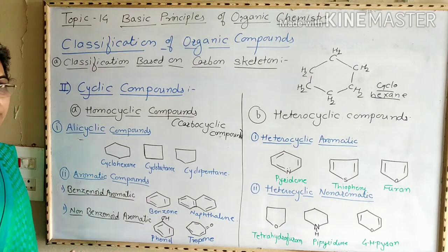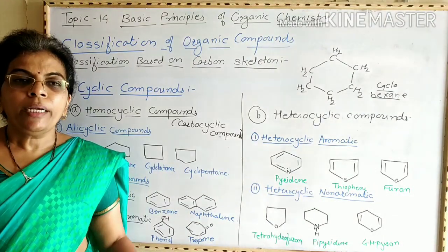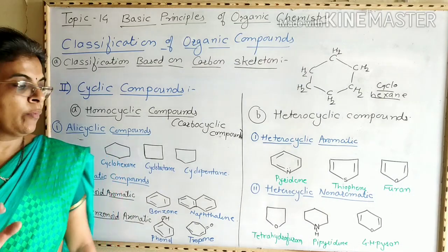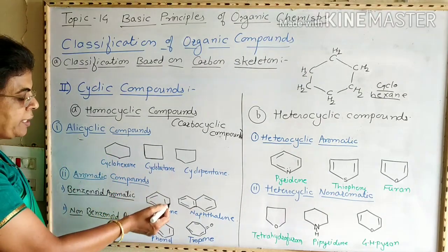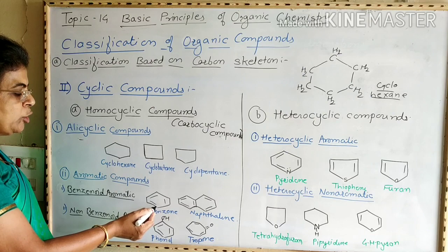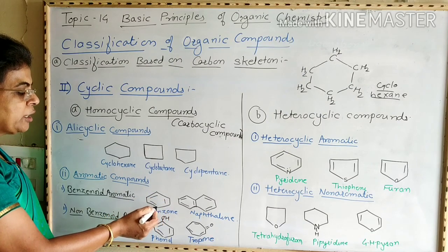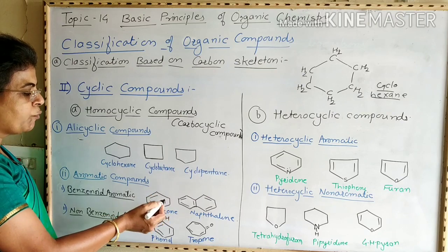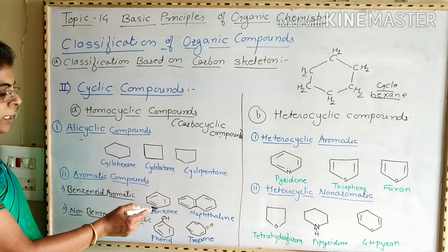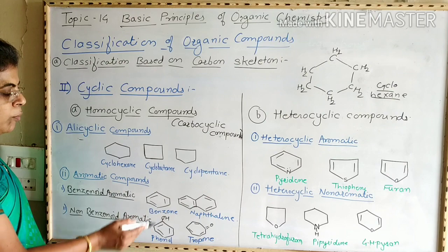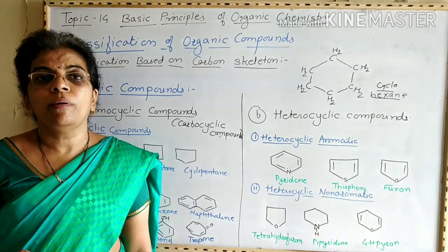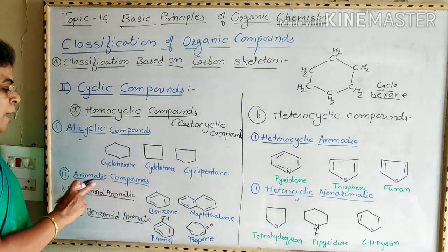The second type is aromatic compounds. Aromatic compounds are those in which there is an alternate carbon-carbon double and single bond in the ring. For example, benzene has the molecular formula C6H6. At each corner there are six carbon atoms, and the ring is formed by alternating carbon-carbon single and double bonds — double bond, single bond, double bond, single bond, double bond, single bond. Therefore they are named as aromatic compounds.